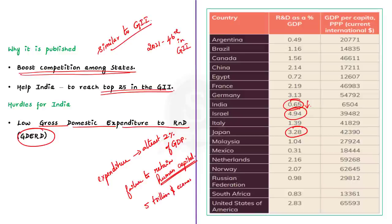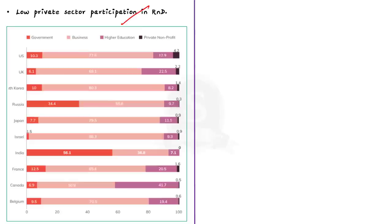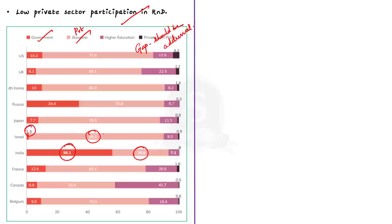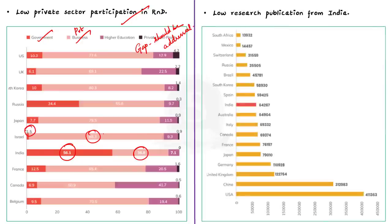The second obstacle is that India faces low private sector participation in research and development. For India, 56.1% of investment in R&D comes from the government, while for Israel this value is just 1.5%. In private sector investment in R&D, India has just 36.8% compared to Israel's 88.3%. The index says that the gap between public and private sector investment in R&D must be addressed. Finally, the third obstacle is that research publications from India are low — India is among the lowest when compared to other countries — and this must be addressed.